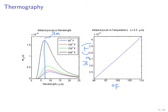The second approach is to fix the wavelength. On the right-hand side, W_lambda(T) is plotted with lambda fixed, as a function of temperature. With degrees Fahrenheit on the x-axis, restricted between 90 and 110 degrees, the infrared power W_lambda is a relatively linear function of temperature over this range, so we can use this relationship to recover the temperature.